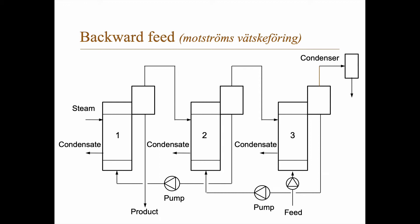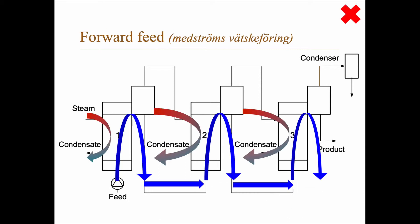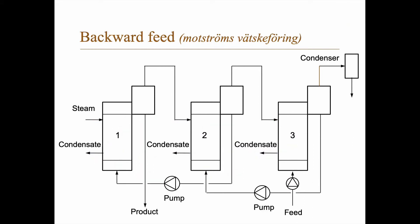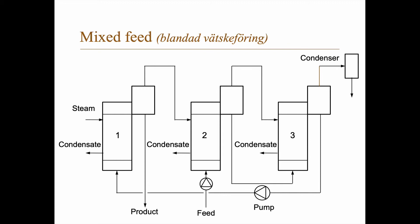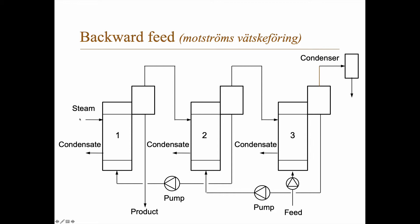Backward feed is the opposite. With forward feed, you need to pump the feed into the first evaporator, but then the pressure is lower in evaporators two and three, so the feed may flow without pumping due to the pressure difference. In backward feed, however, you put the feed into the last evaporator, so although the steam still goes in the same direction, the feed goes in the opposite direction — from low pressure to higher and higher pressure. That means you definitely need a pump between each evaporator.